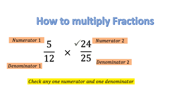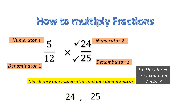So let us check another pair of numbers. Let's take 24 and 25. Do they have any common factor? There is no number which has both 24 and 25 in its multiplication table.